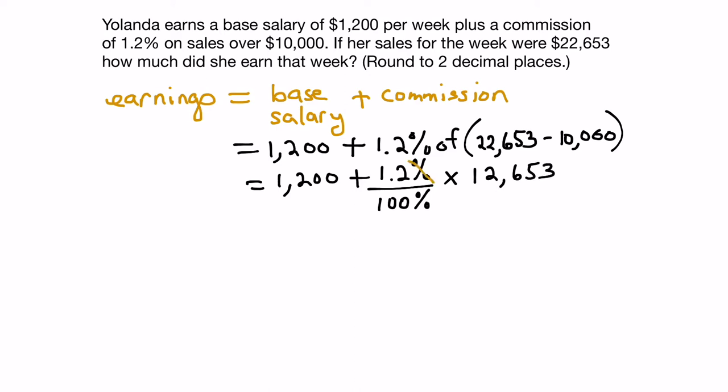Next, we can see that the percent symbols will cancel each other out. Now, if we're dividing by 100, what we're doing is we're going to be moving this decimal two places to the left, 1, 2. So what we'll end up with is plus 0.012, and we still have to multiply by the 12,653, and we still have the $1200 base salary in front.